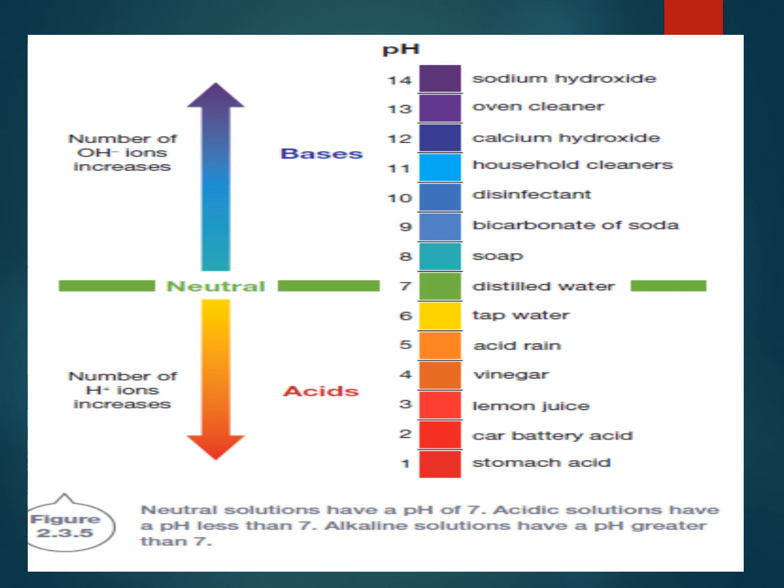The pH scale is a logarithmic scale, so each interval represents a power of 10. For instance, the difference between distilled water and stomach acid — from pH 7 to pH 1 — is an interval of 6, but that's actually 10 to the power of 6, meaning stomach acid is a million times more acidic than distilled water. Even lemon juice at pH 3 compared to tap water at roughly pH 6 is an interval of 3, meaning lemon juice is a thousand times more acidic than tap water.